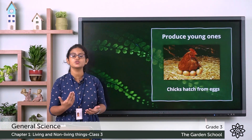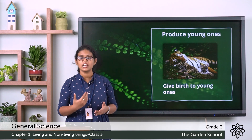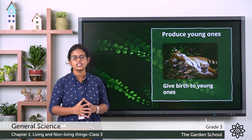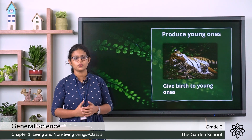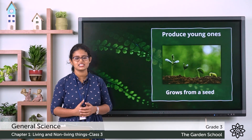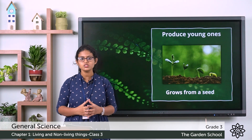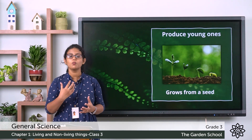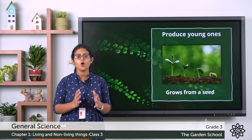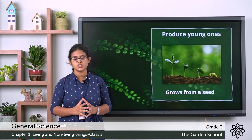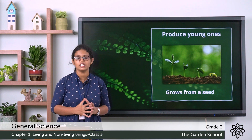Then there are animals such as tigers, lions, and cows — all these animals give birth to young ones. What about plants? A new plant grows from a seed. Most plants bear fruits, and fruits have seeds, and the seeds give rise to a new plant. So all living things reproduce, and that is the most important criteria for being a living thing.